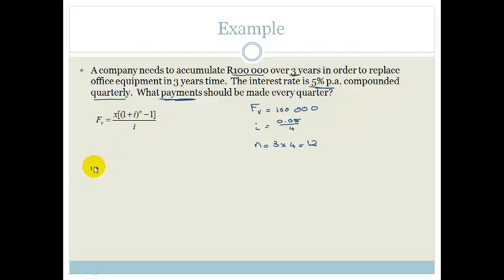So, now what we're going to do is substitute all this in to find out the amount of payments, which is our X. We've got 100,000 = X[(1 + 0.05/4)^12 - 1]/(0.05/4). First I'm going to get X by itself. So, I'm going to times both sides by 0.05/4. So, I get 100,000 × 0.05/4 = X[(1 + 0.05/4)^12 - 1].